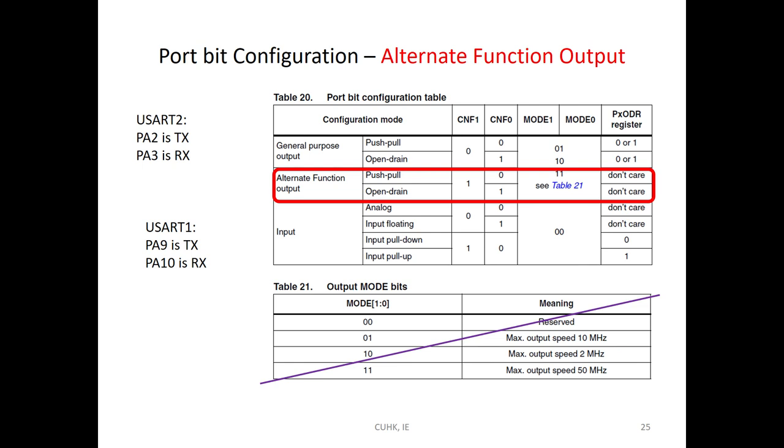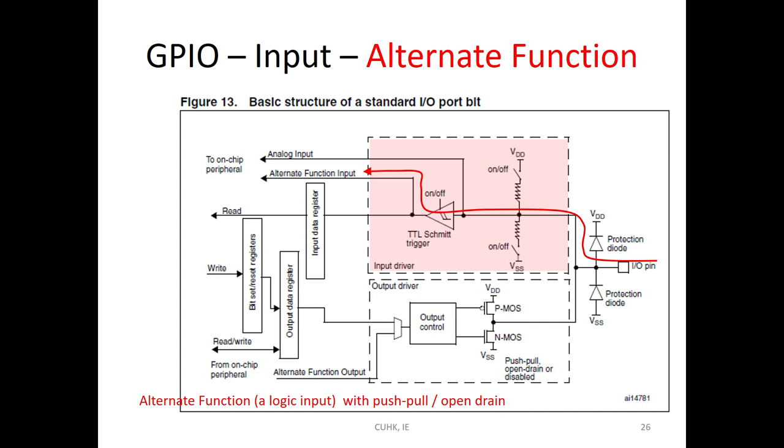In experiment 1, we study the output and input. So, experiment 2, we will use alternative function. Then, we will use the alternative function UART. UART 1 is PA-9, PA-10. UART 2 is PA-2 and PA-3. Now, when you use alternative function. The signal comes from outside to here. Then, through the Schmitt trigger. So, after that must be high or low. Then, use alternative function this path. So, you will not use the input data register. You will use another register for alternative function.